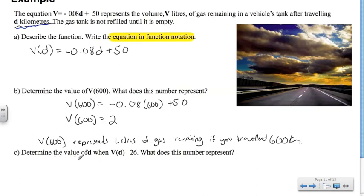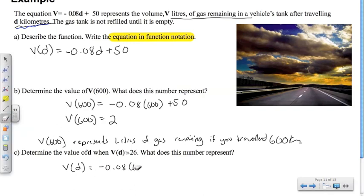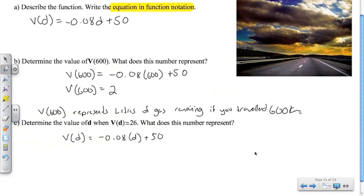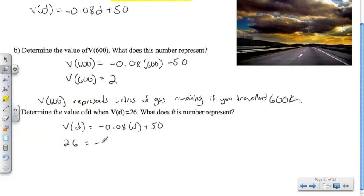For part C, determine the value of D when V(D) is equal to 26. They've given us V(D) — the liters of gas remaining — as 26. Taking the equation V(D) equals negative 0.08 times D plus 50, we replace V(D) with 26: 26 equals negative 0.08D plus 50. Now we're isolating D.